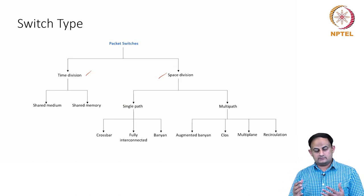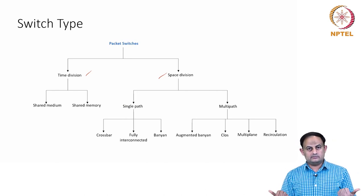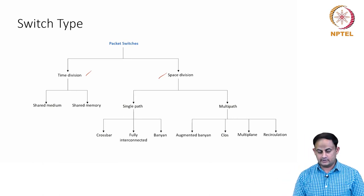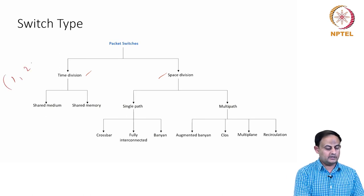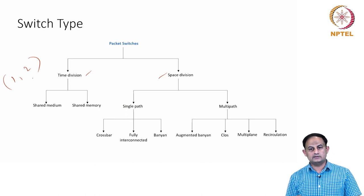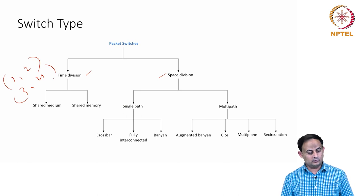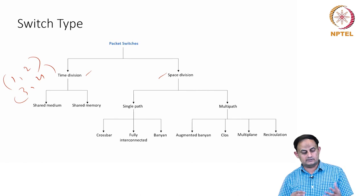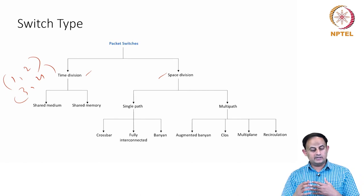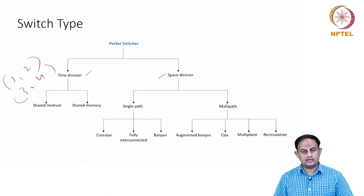In the time division fabric, only one pair of ports is engaged in communication at a time. If input port number 1 and 2 are engaged in communication, then ports 3 and 4 cannot talk in parallel — only one pair at a time. If your switch fabric allows only that kind of communication, it is called a time division type switch.